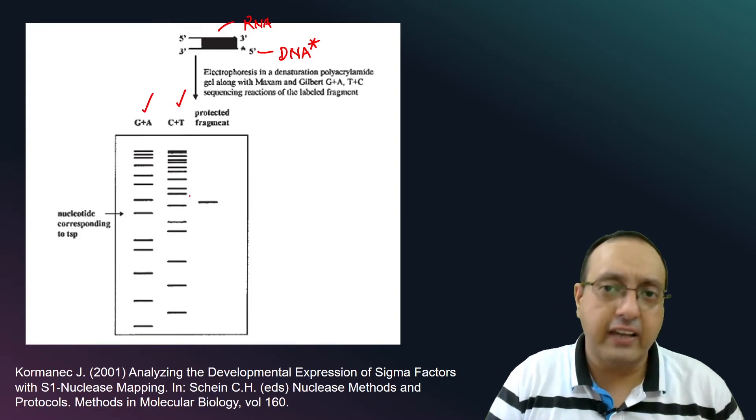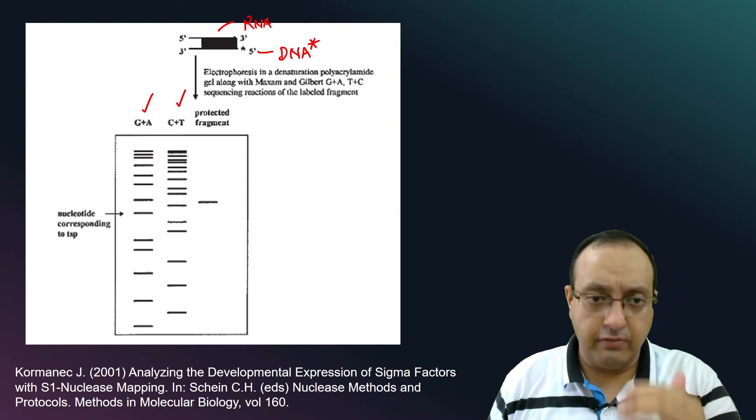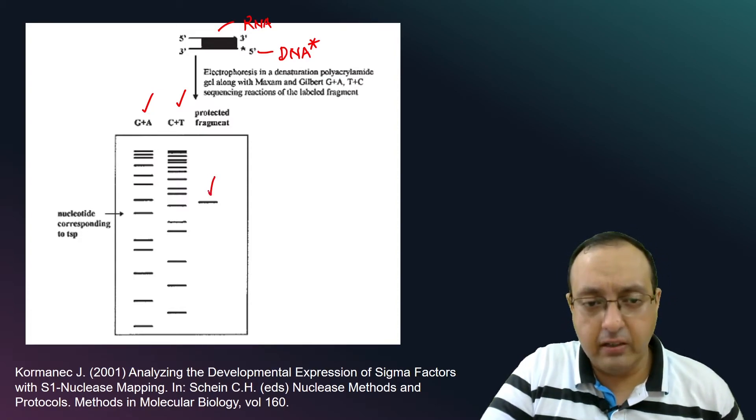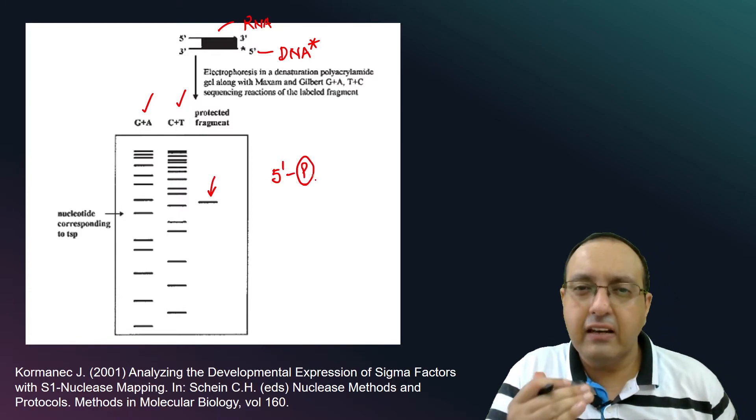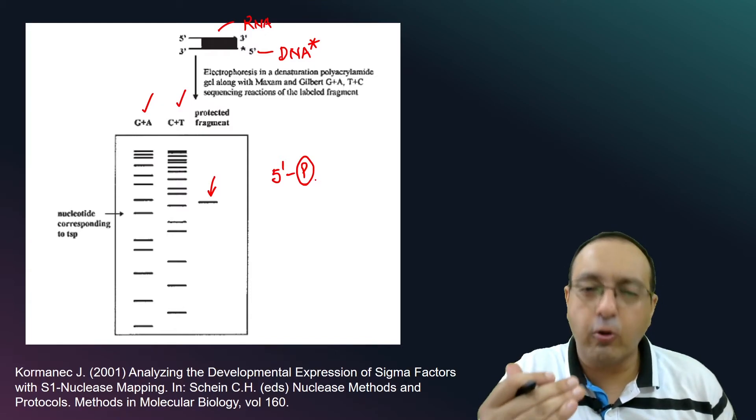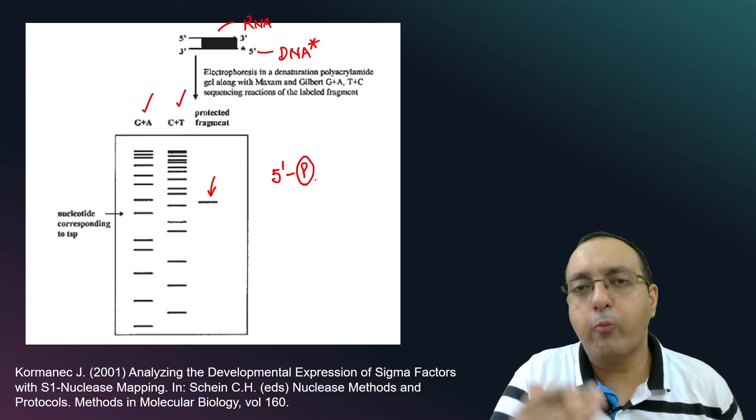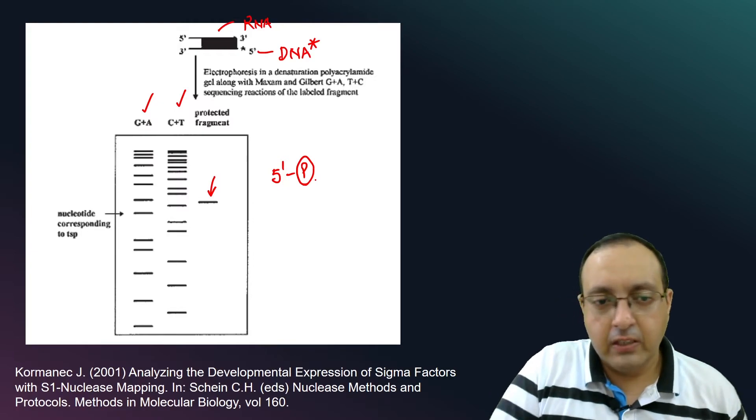And we can identify the exact size of the fragment. This is the protected fragment. And because it contains a five prime phosphate attached to it, its mobility is a little bit slower. So it has a higher molecular weight, just a little bit, about 1.5 nucleotide higher.